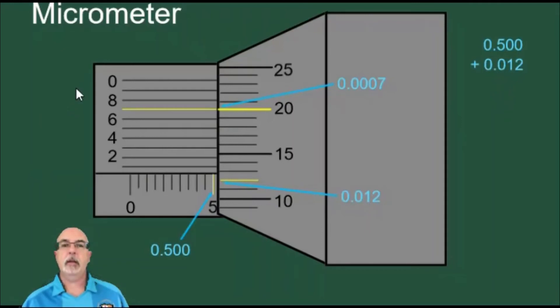Now we're using the Vernier scale, the last of the three scales we need to use. We're looking for a line on the Vernier scale that lines up perfectly with one of the horizontal lines on the thimble. The line that lines up perfectly is the one for seven, which lines up with the line for 20.